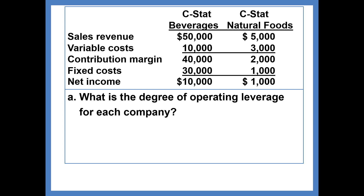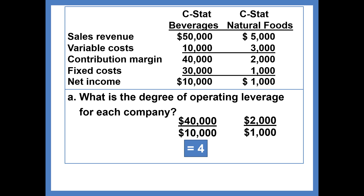We're going to calculate the degree of operating leverage for each company by taking contribution margin divided by income. For the beverage company, that's $40,000 divided by $10,000, which equals 4. For the natural foods company, that's $2,000 divided by $1,000, which equals 2. Since the beverage company has twice the degree of operating leverage, their profits are twice as volatile. The company with relatively higher fixed costs — the beverage company — has the higher degree of operating leverage.